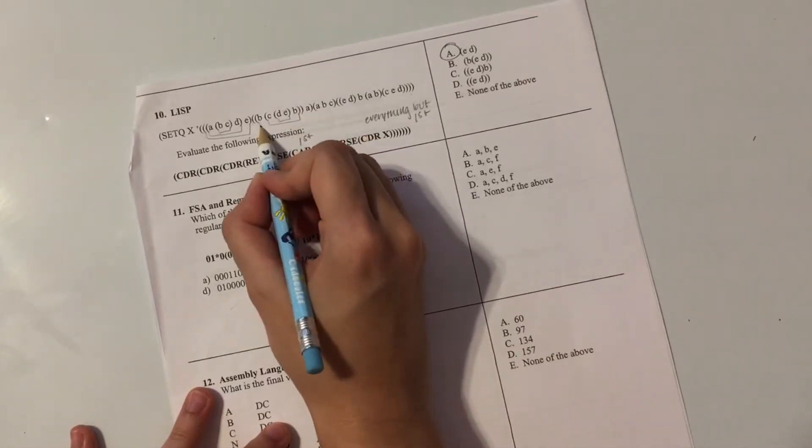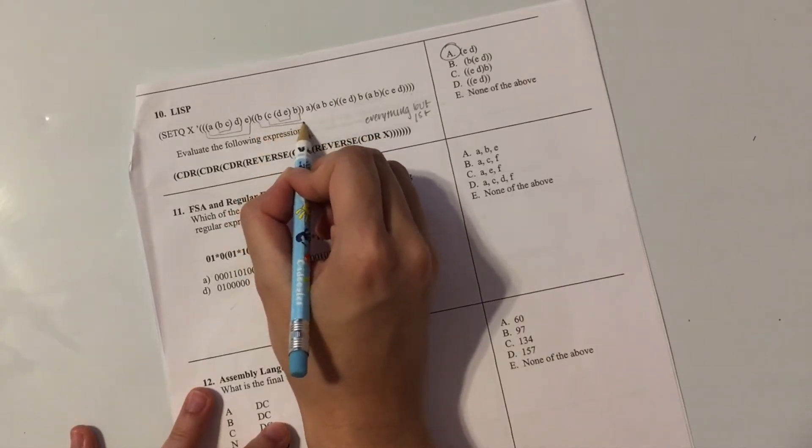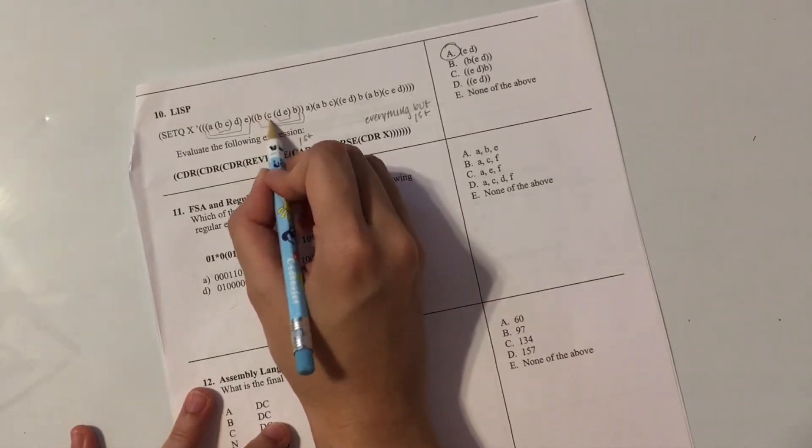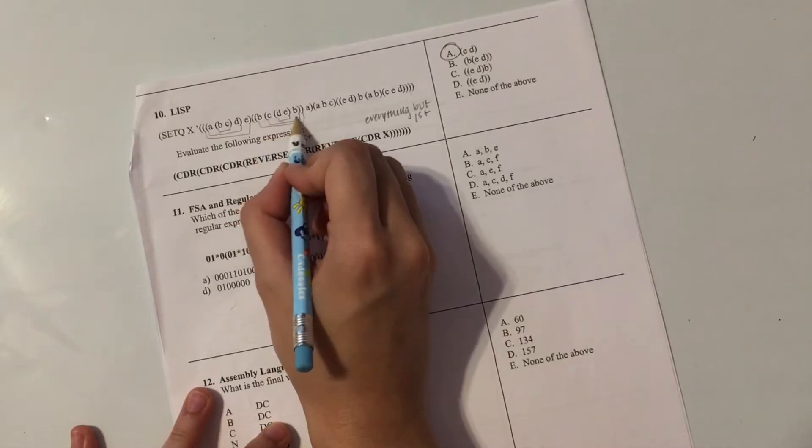And then we have this set of parentheses. So that's a list of B. And then a second list of all of this junk.